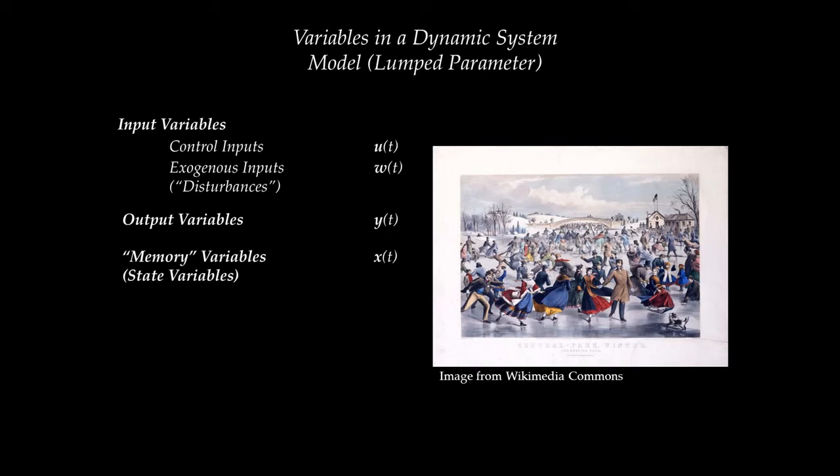Our goal is to come up with a mathematical representation for the dynamics of the system that captures the relationship between input variables, output variables, and memory variables. One of the most important steps toward building such a model is to represent the idea of memory — that the state of the system is a memory of the past. I need a mathematical operator that allows me to represent the ability to remember the past.